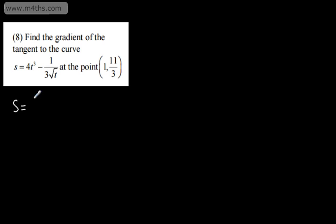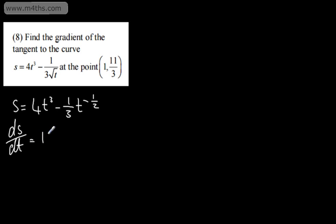Question 8: find the gradient of the tangent of the curve s is equal to 4t cubed minus 1 over 3 root t, at the point 1, 11 thirds. So what we want is ds dt — the gradient function — and all I need to do is substitute in t is equal to 1. Writing s as 4t cubed minus one third t to the negative one half, ds dt multiplying down gives 12t squared, and the second term gives plus 1 over 6 times t to the negative 3 over 2.